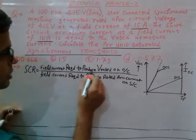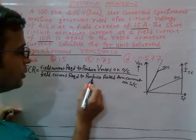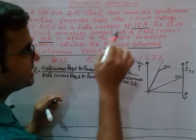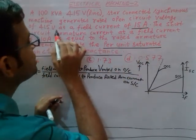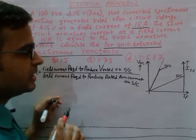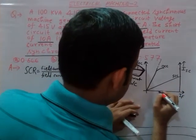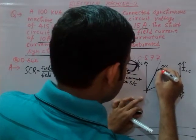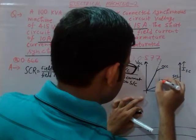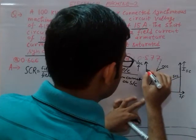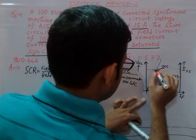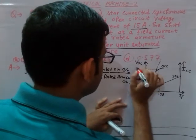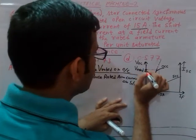In this question, 15 amperes of field current is required to produce rated voltage on open circuit. So on our graph, with short circuit current on one axis and field current on the horizontal axis, this 15 ampere field current corresponds to the rated voltage on open circuit.